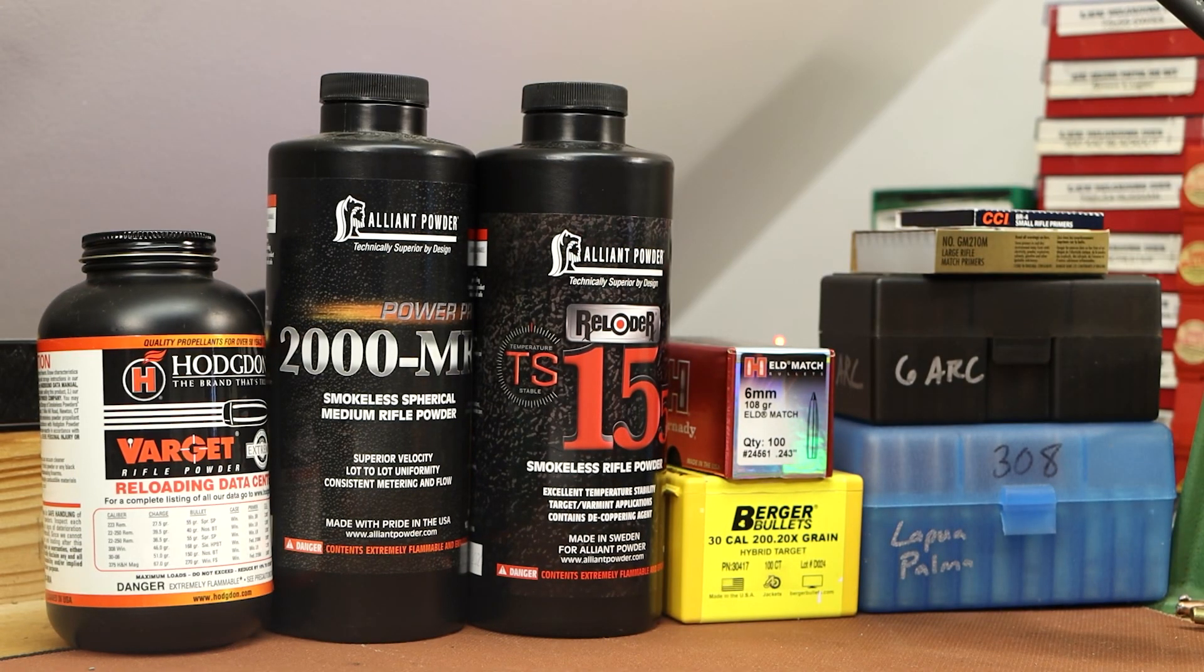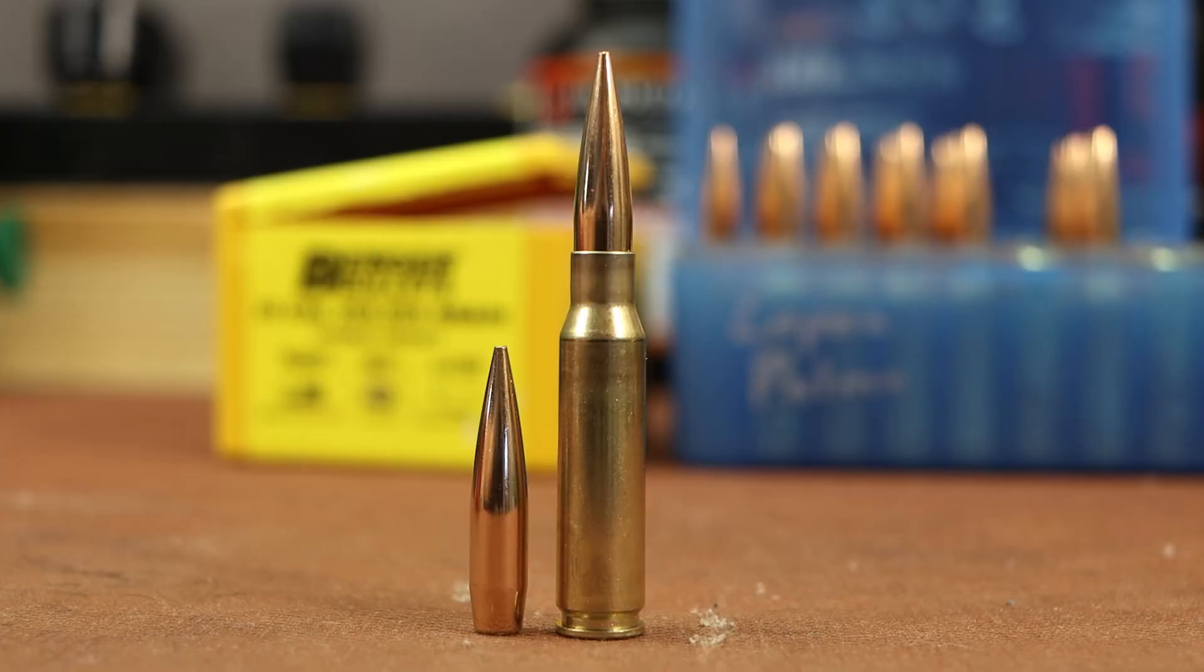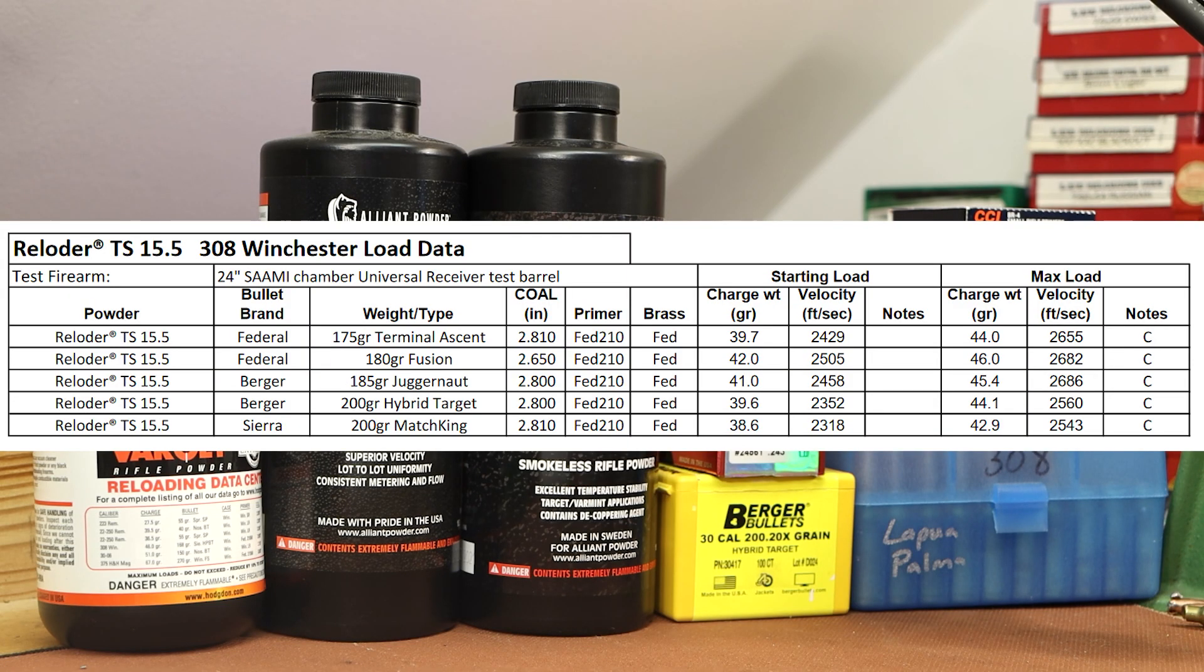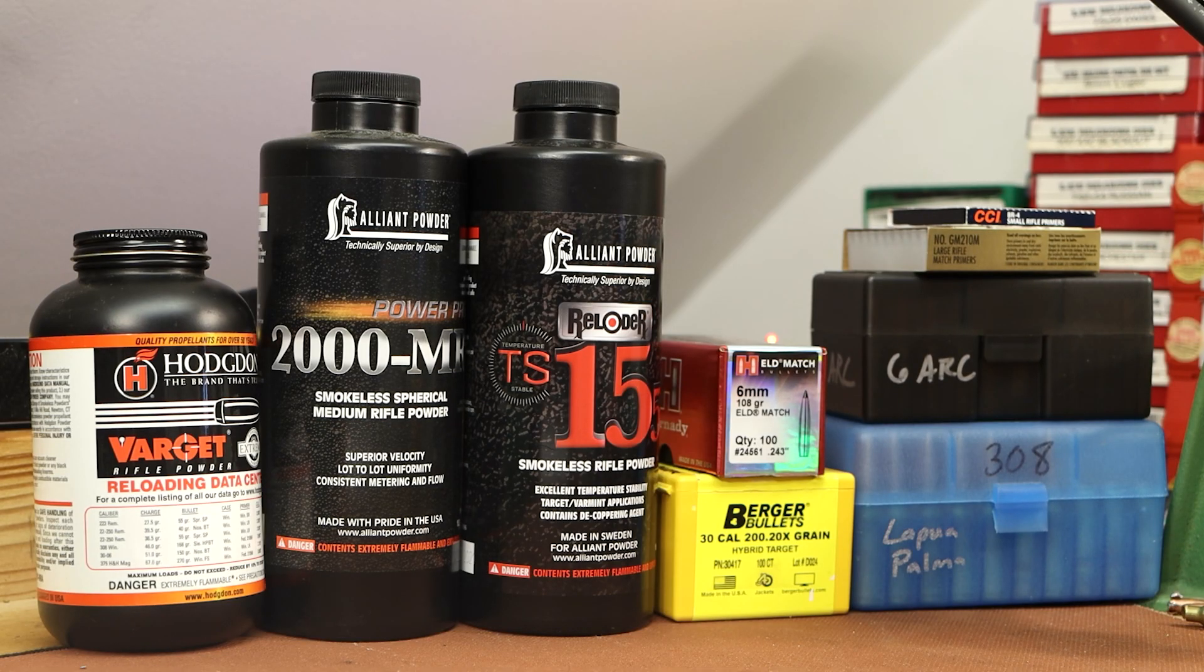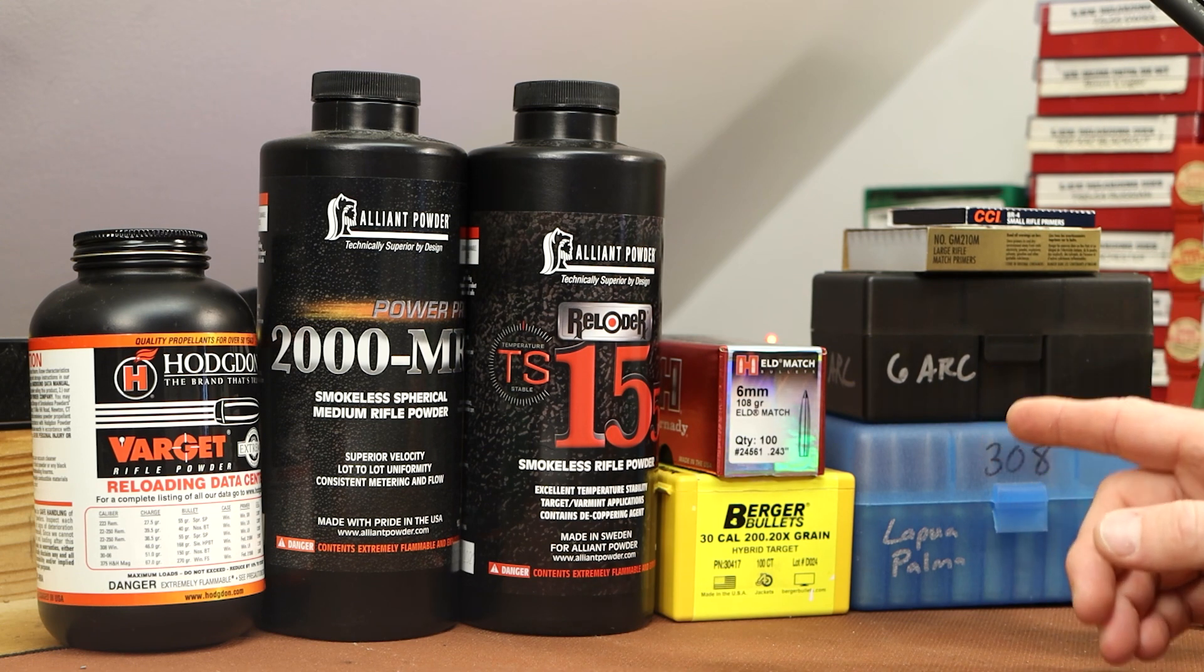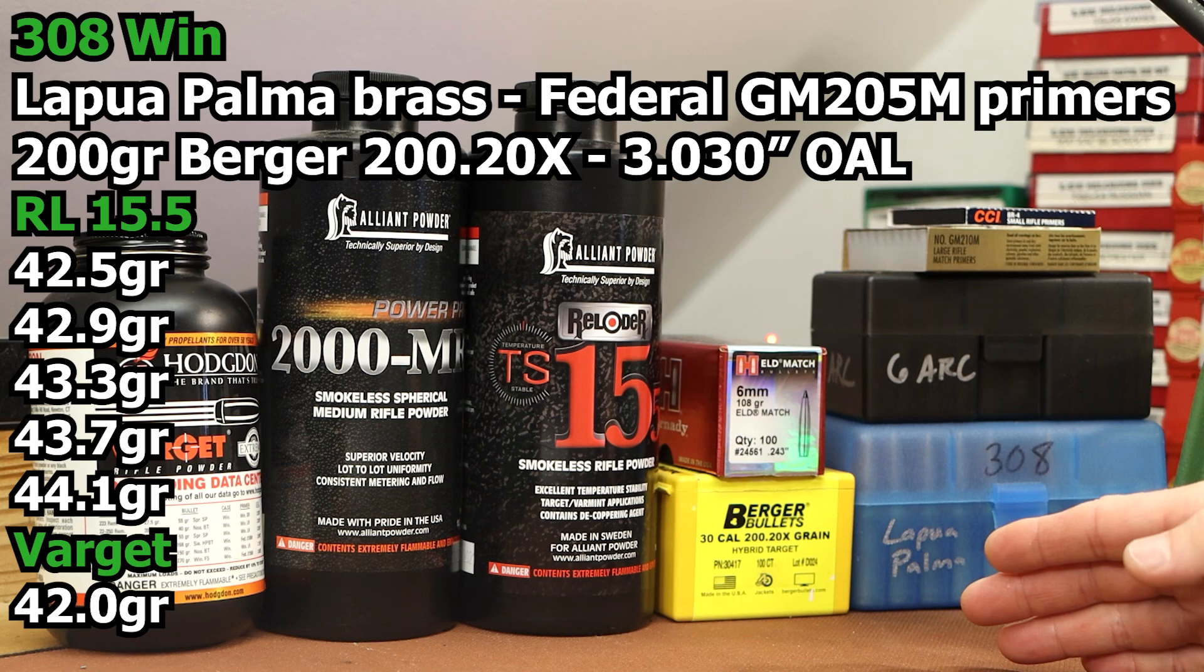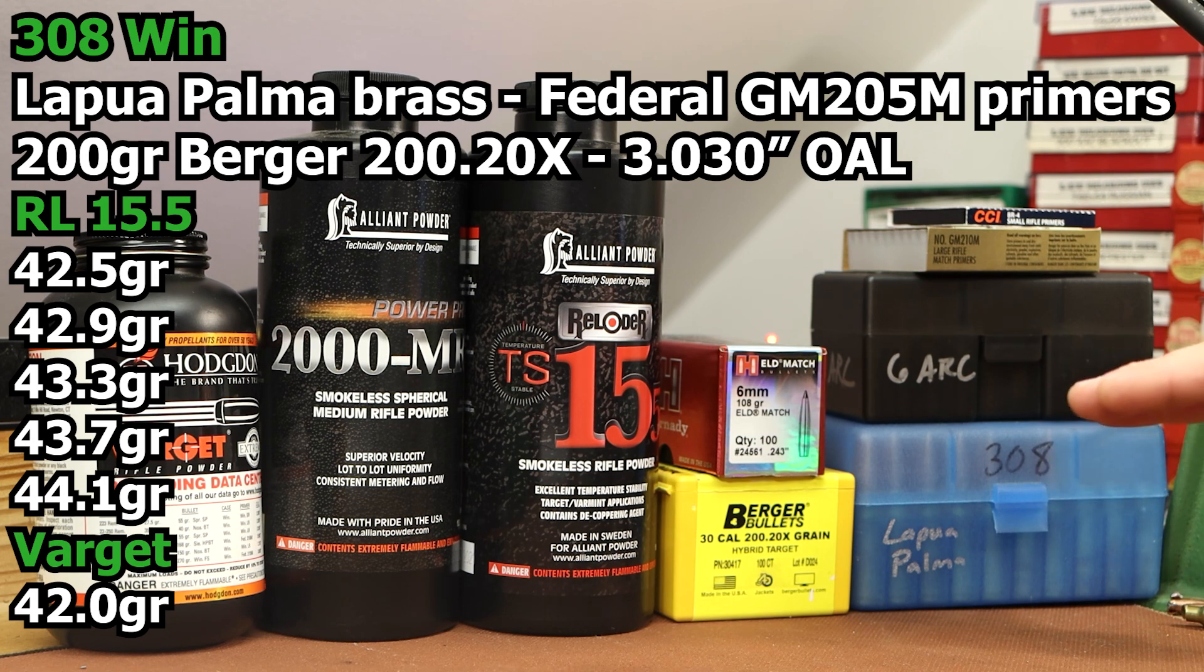Today I want to shoot 308 and 6 millimeter ARC. In 308 I want to shoot this big Berger 200.20X bullet. These Berger bullets are extremely long and my understanding is the guys that shoot these in F-class competition with big 30 inch long barrels and chambers with long throats can seat these way out long. My Krieger AR-10 barrel has a standard 308 chamber so my max overall length is right at 3.050. I want to shoot 3.030 inches overall length, so these are extremely long, they're not going to fit in a magazine, we're going to single feed them.